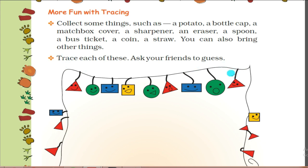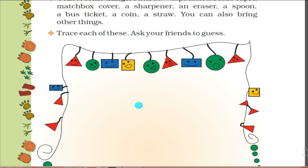So here you need to trace things like potato, bottle cap, matchbox cover, sharpener, eraser, spoon, bus ticket, coin, and straw. Trace each of them and ask your friends to guess what kind of trace it is.